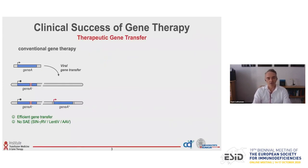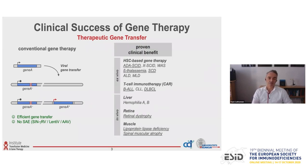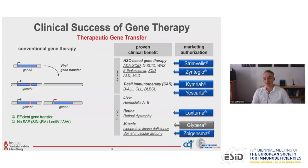Gene therapy has really been a clinical success in the last couple of years. It's mostly based on viral gene transfer, either in vivo or ex vivo. It has proven clinical benefits in many different disease areas. Some of these preclinical results and clinical studies were then translated to marketing authorization of a couple of products, including Strimvelis, which is now a gene therapy product to treat ADA SCID.